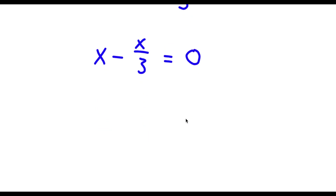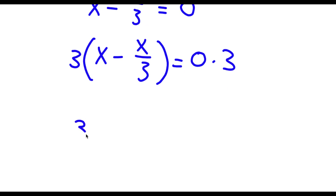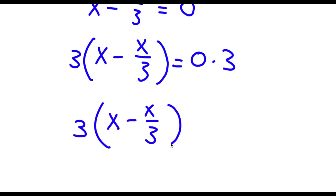From here I'm going to multiply both sides by 3. So now I have 3 times x minus x over 3 is equal to 0 times 3. Well, 0 times any number is simply going to be 0. So 0 times 3, that's 0. So now I have 3 times x minus x over 3 is equal to 0.